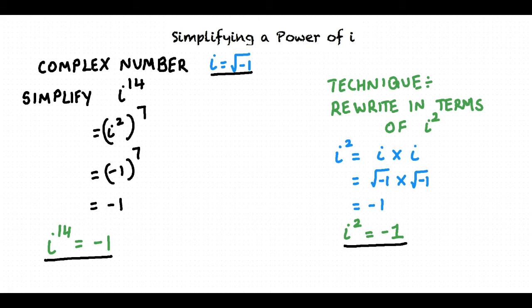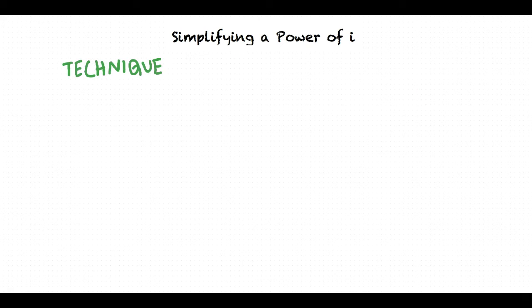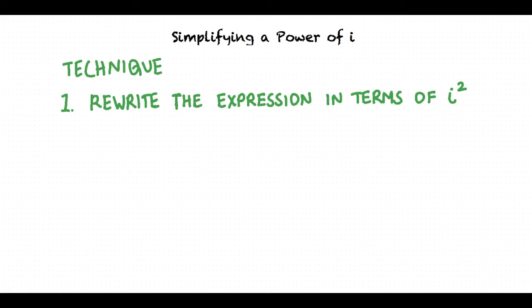Perfect! Thus, to simplify a power of the complex number i, we rewrite the expression in terms of i squared. Finally, we replace i squared with negative 1.